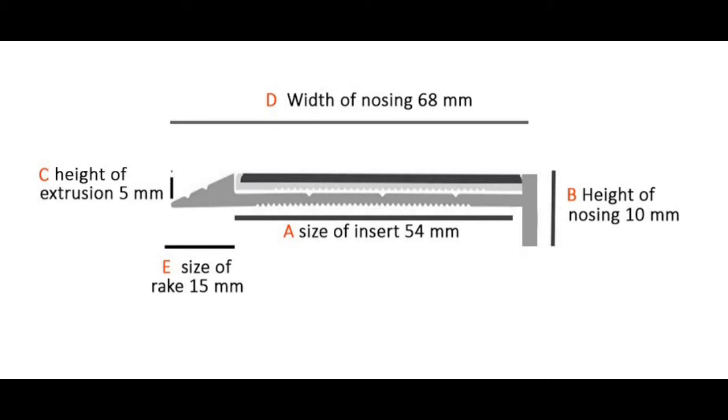Using the 12 series as an example for compliance, what we have here is an insert which is 54 mil. The minimum that you can have is 50 mil. Also, if we take a look at the back of the nosing,